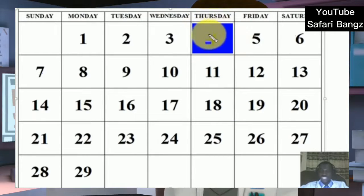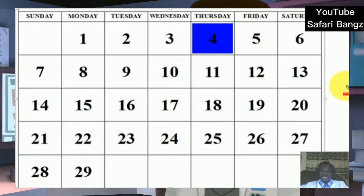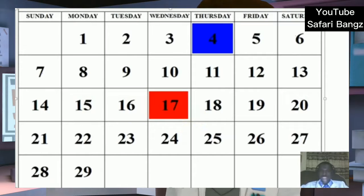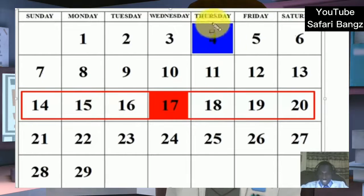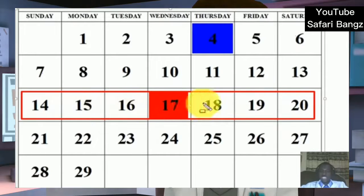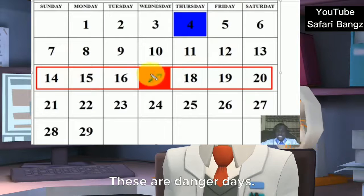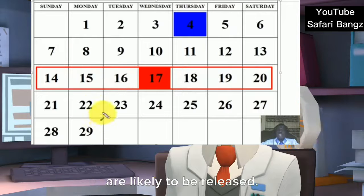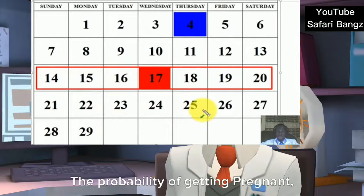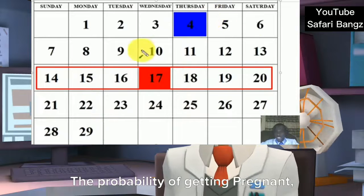The second thing to note is that when it comes to calculating your safe period, you must avoid day 14 and the days around it. These days are the most dangerous days. If you count from the day you started bleeding down to the 14th day, you should avoid having sex on the days around the 14th. Day 14 and the days around it are danger days, because it is the day the eggs are likely to be released and the probability of getting pregnant is very high.